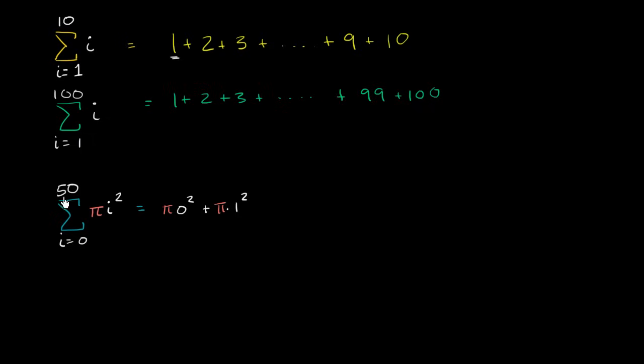Well, is 1 our top value right over here where we stop? No, so we keep going. So then we go i equals 2. Pi times 2 squared. So plus pi times 2 squared. Pi times 2 squared.